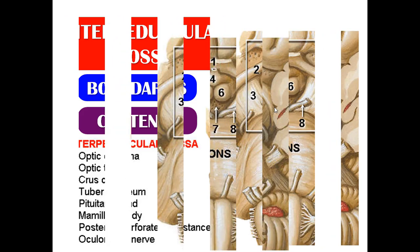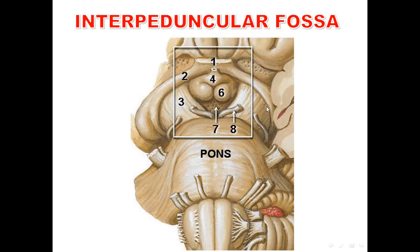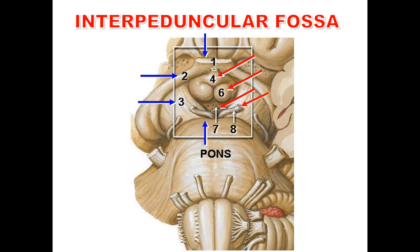Another slide of the interpeduncular fossa: boundaries — anterior is the optic chiasma, posterior is the pons, on each side the optic tract (anterior) and crus cerebri (posterior). Contents: tuber cinereum, mammillary bodies, posterior perforated substance, and exit of the oculomotor nerve. The interpeduncular fossa is essentially the floor of the hypothalamus.